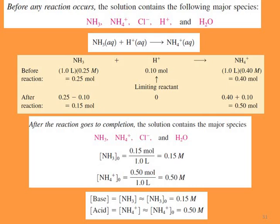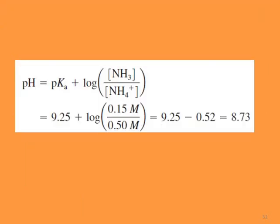After the reaction: NH₃ = 0.25 − 0.1 = 0.15 mol; H⁺ = 0 (fully consumed); NH₄⁺ = 0.40 + 0.1 = 0.50 mol. Using Henderson-Hasselbalch: pH = pKa + log([NH₃] / [NH₄⁺]) = 9.25 + log(0.15 / 0.50) = 8.73.